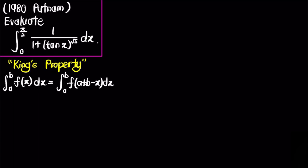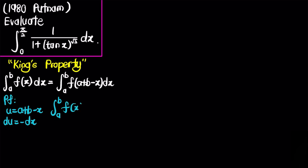Let's quickly prove this. For the proof, we let u equal a plus b minus x, so du equals negative dx. Our original integral from a to b of f(x) dx becomes a new integral with changed limits and variable.